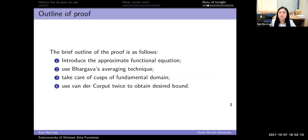From now on, I'll sketch the proof for the rest of the time. The basic outline: we first introduce the approximate functional equation, then use Bhargava's averaging technique, then take care of the cuspidal forms, then using the van der Corput inequality twice and Cauchy-Schwarz inequality, we finish the proof.